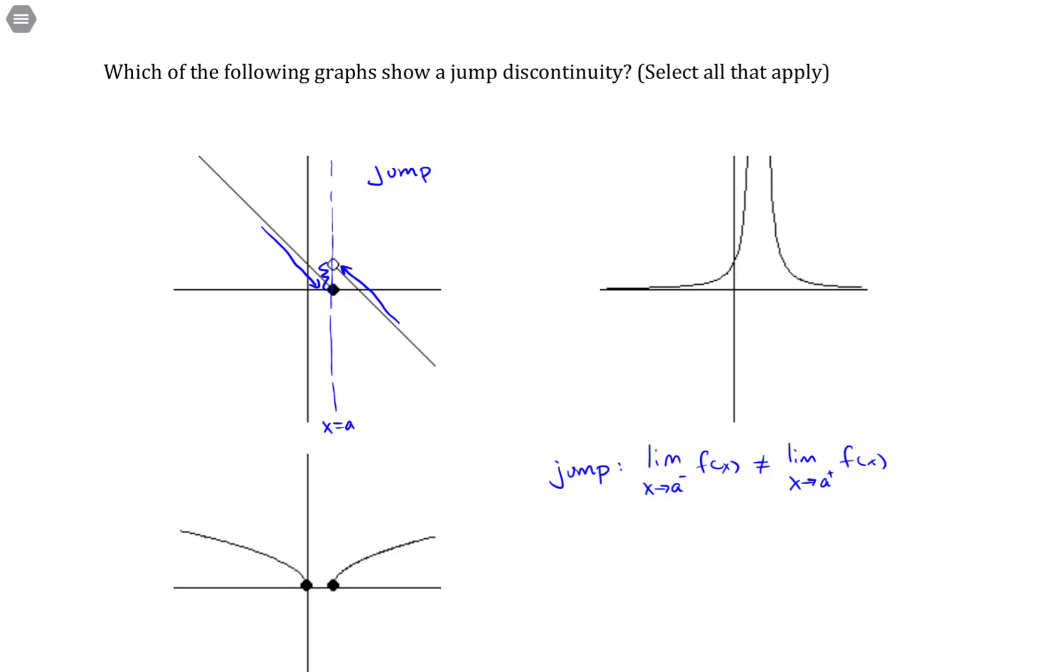In the next one, we don't have a jump, but rather an asymptote. These are going to positive infinity on both the left and right hand side. And because they're not finite, that's not technically a jump.